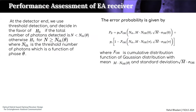Now let's look at the results. At the detector end we use threshold detection and decide in favor of H₀ if the total number of photons detected n is less than n_th(θ), otherwise H₁ if n is greater than n_th(θ). The error probability is given by p₀ multiplied by a cumulative distribution term plus p₁ multiplied by one minus that cumulative distribution term. Here f_OH is the cumulative distribution function of the Gaussian distribution with mean m·N_OH(θ) and standard deviation √m·σ_OH.